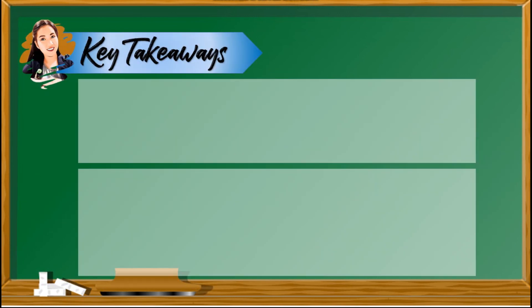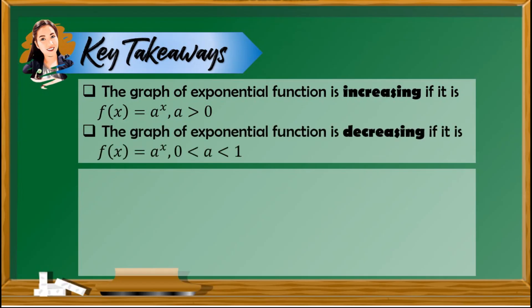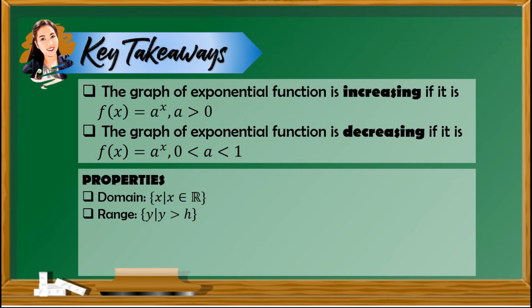What are the important things to take note? The graph of an exponential function is increasing when the value of a is greater than 1. It is decreasing when a is between 0 and 1. Regarding the properties of exponential functions, the domain is always the set of real numbers, and the range is y is greater than h. It can also be less than h if there is a negative sign beside the value of a.